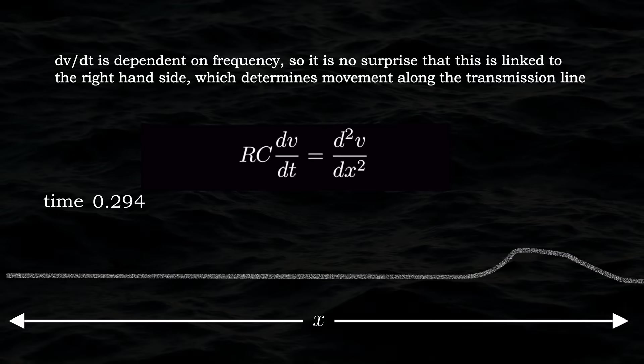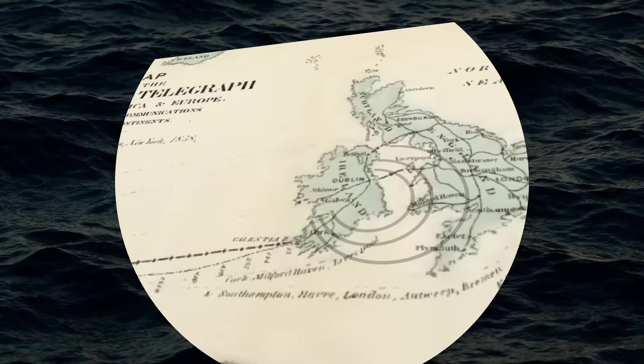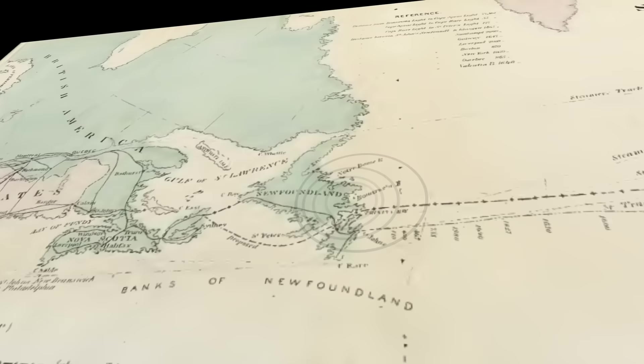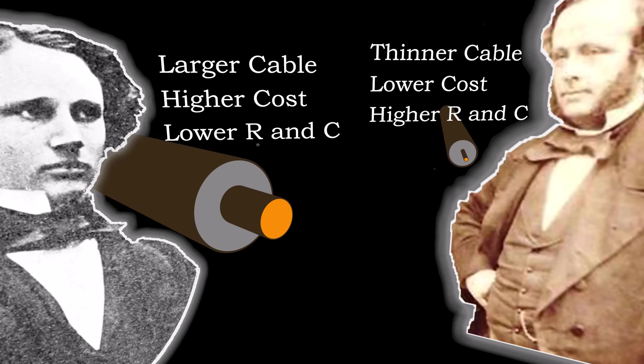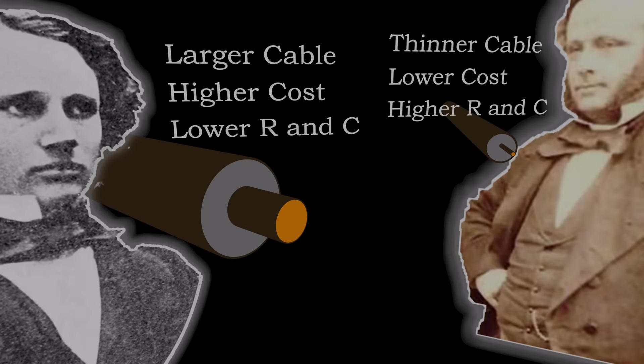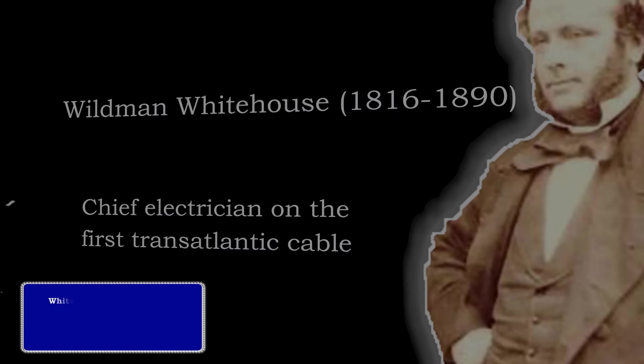Around three years following the publication of Thomson's groundbreaking new model for long cables, the first successful transatlantic cable was finally laid. The design of the cable was subject to fierce debate. Whereas Thomson wanted a thicker conductor to minimise the resistance and, as his analysis shows, minimise the distortion, Chief Electrician Wildman Whitehouse argued for a thinner, cheaper conductor. It was the latter who ultimately prevailed, in part due to the scepticism over Thomson's law of squares.